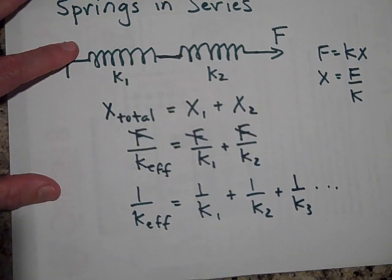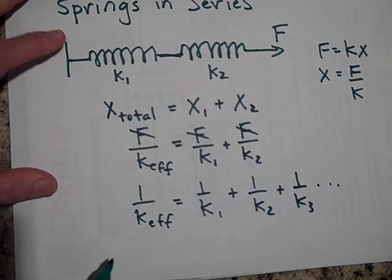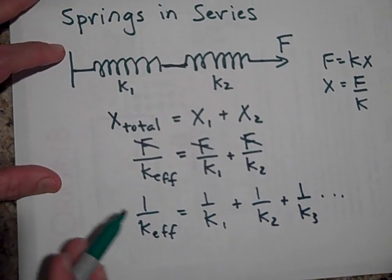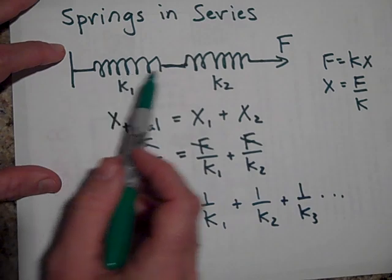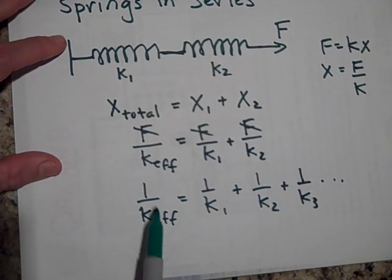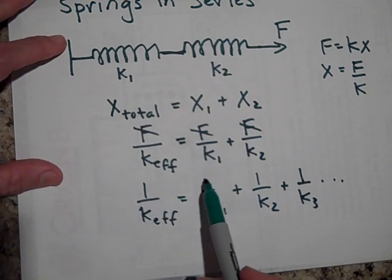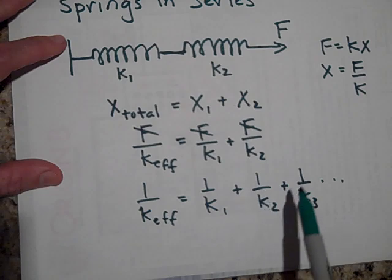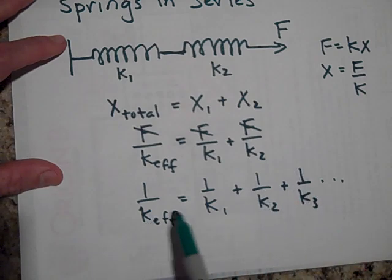So they add like resistors that are in parallel. So they're kind of the opposite of resistors. When resistors were in series, they added, but when they were in parallel, they had the 1 over R equals 1 over R equivalent is equal to 1 over R1 plus 1 over R2 plus 1 over R3. This is sometimes called K equivalent too.